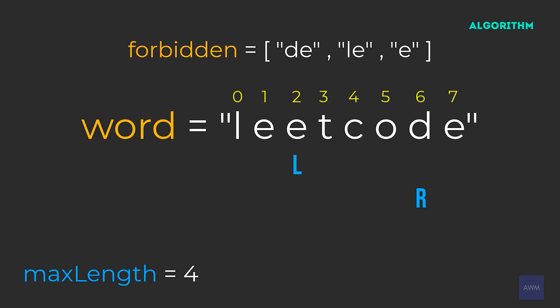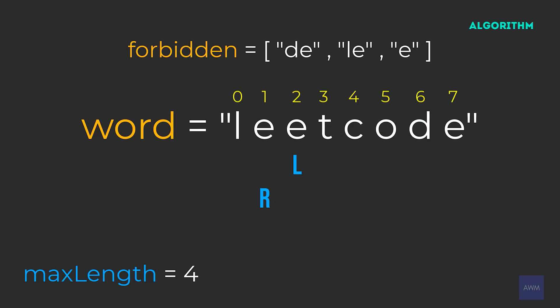Now our left pointer decreases again. The new substring we're looking at is character E. Character E is invalid, so we don't have to check any other substrings for this iteration. Since we found an invalid substring, we can move our right pointer in front of the invalid substring — it becomes index one. Then we decrease our left pointer again, and we're looking at character E once more, which is invalid. So our right pointer moves to index zero, and our left pointer also decreases to zero. The substring we're looking at now is character L — L is valid but not greater than our current max length. And now we're done.